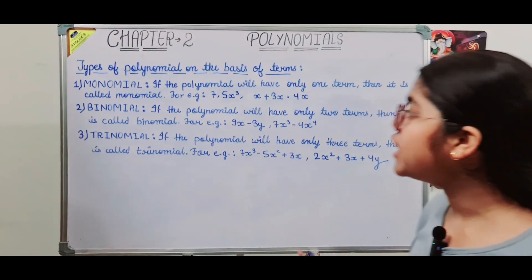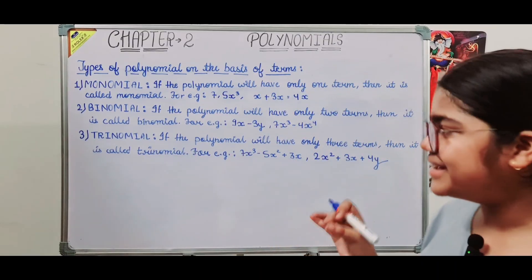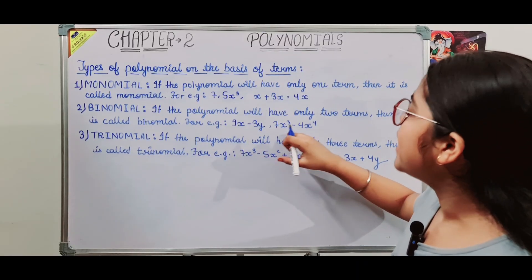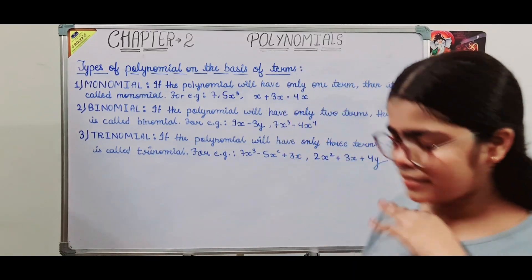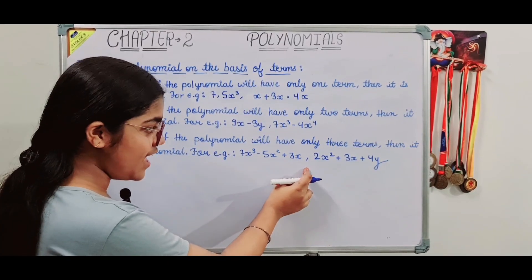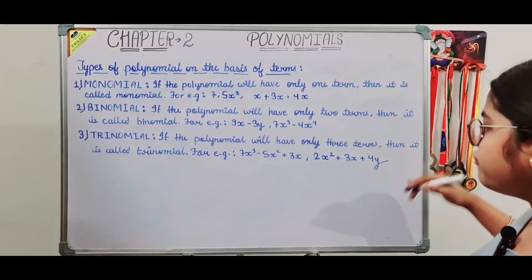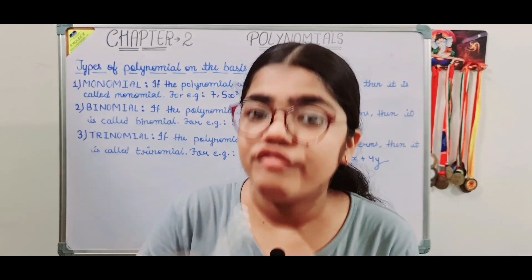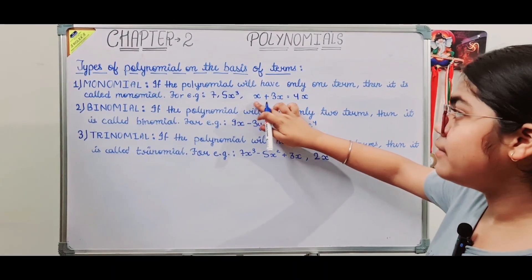Second, what is a binomial? A binomial is a polynomial with exactly two terms that cannot be combined. For example, 4x plus 3x cannot always simplify further. A trinomial has three terms, such as 2x squared plus 3x plus 4y, where there are no like terms. Like terms have the same variable and same power.